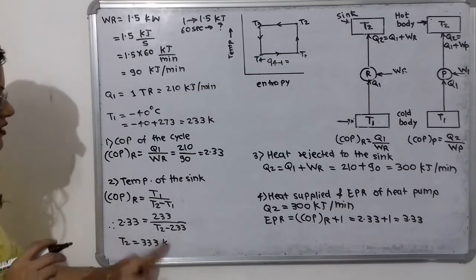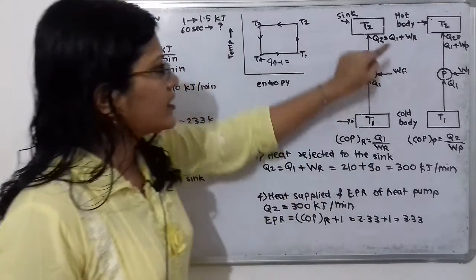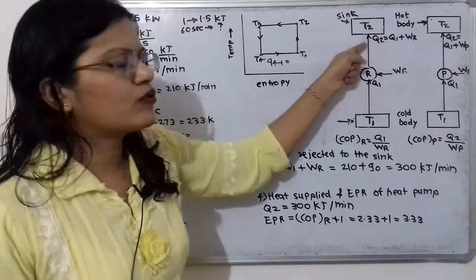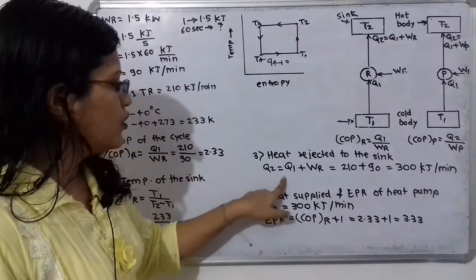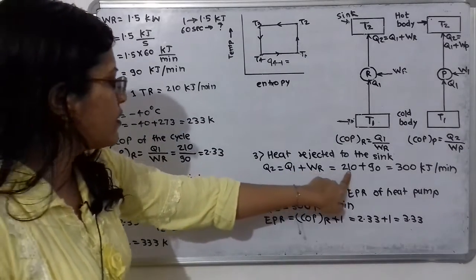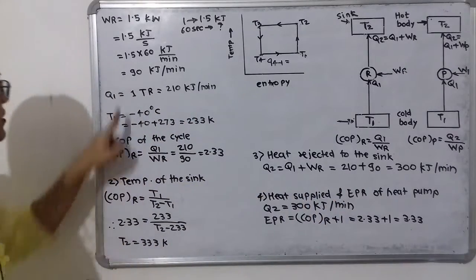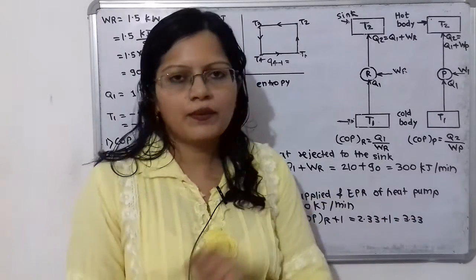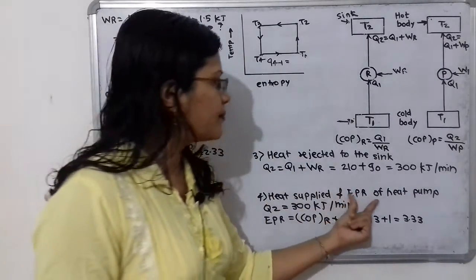Calculation 3 — Heat rejected to the sink: Q2 = Q1 + W_R. Substituting: Q2 = 210 + 90 = 300 kilojoules per minute.